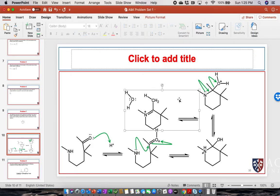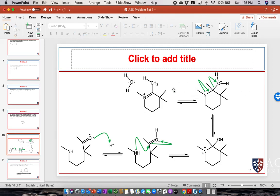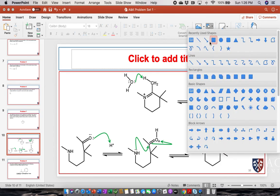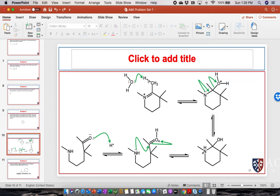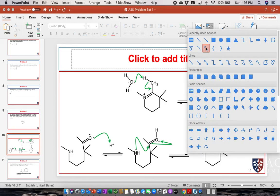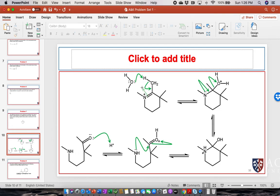So the lone pair of electrons are just going to pull off that proton. And the electrons that were in that carbon-hydrogen bond are now going to move. And they're going to form carbon-carbon double bond. And the electrons that are in the carbon-nitrogen pi bond are just going to find themselves on the nitrogen as a lone pair.